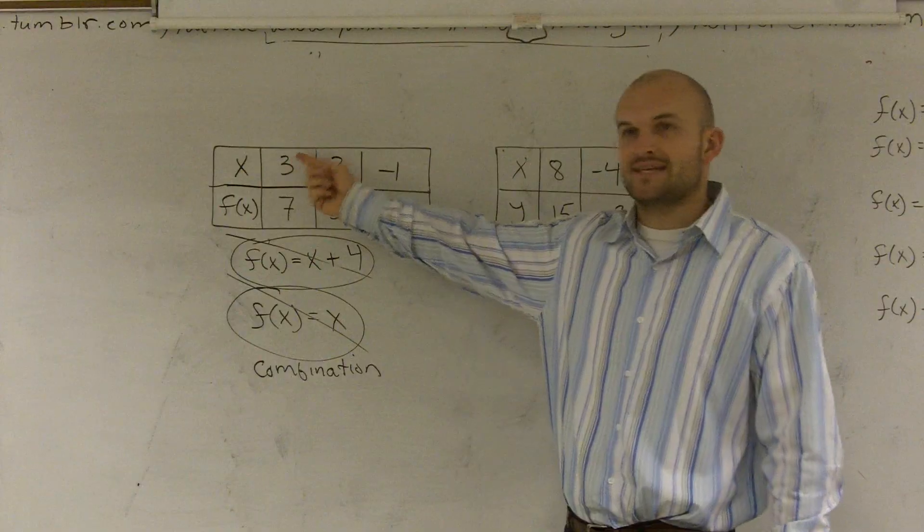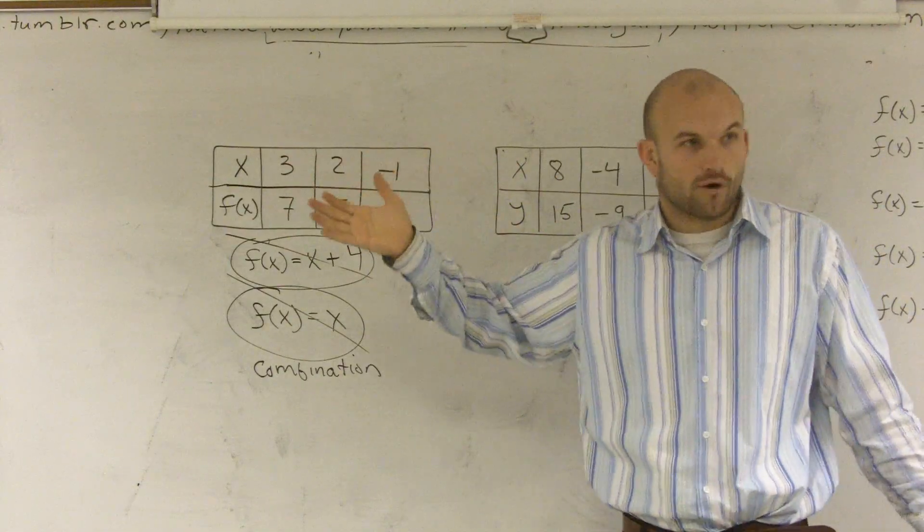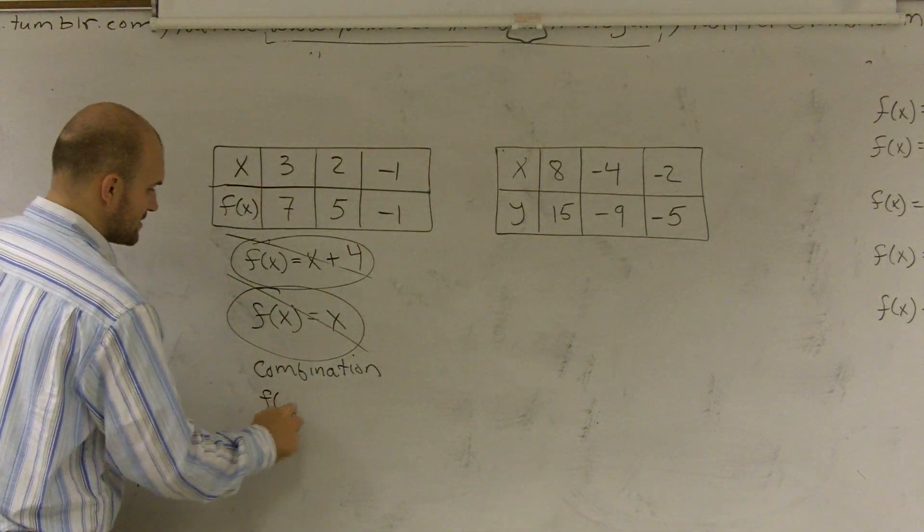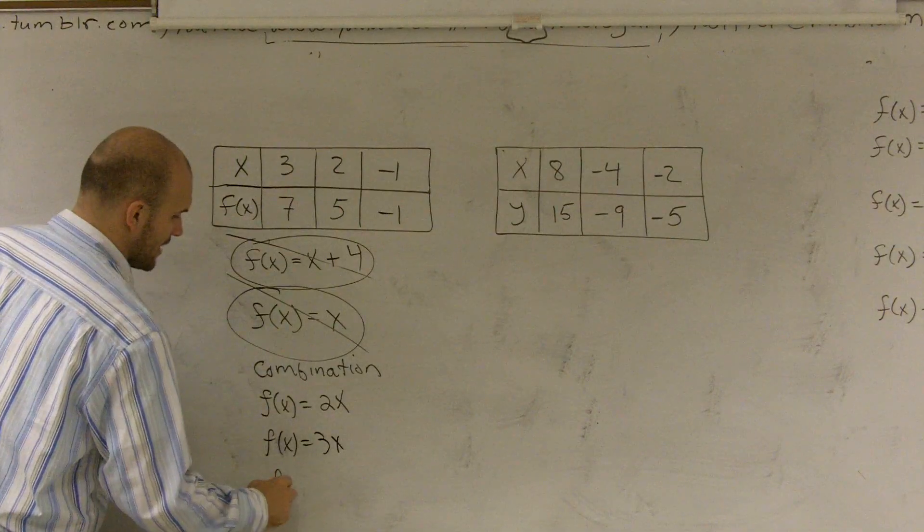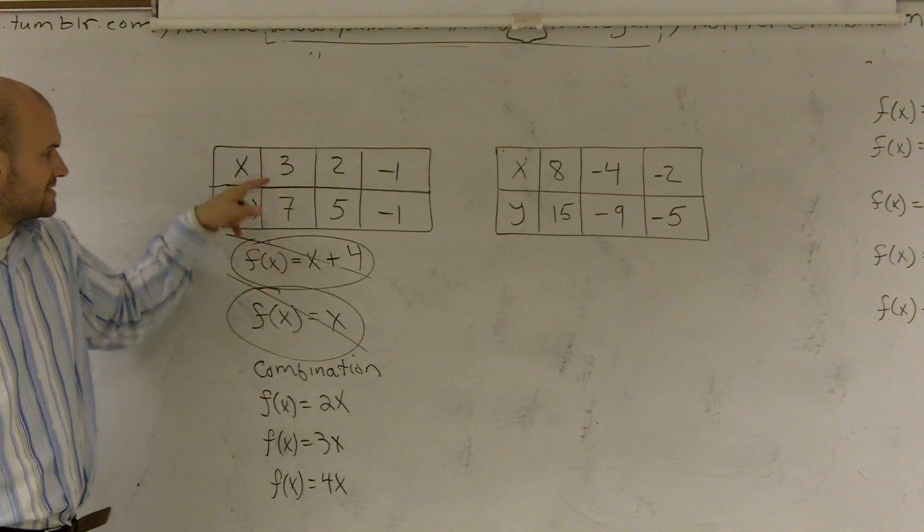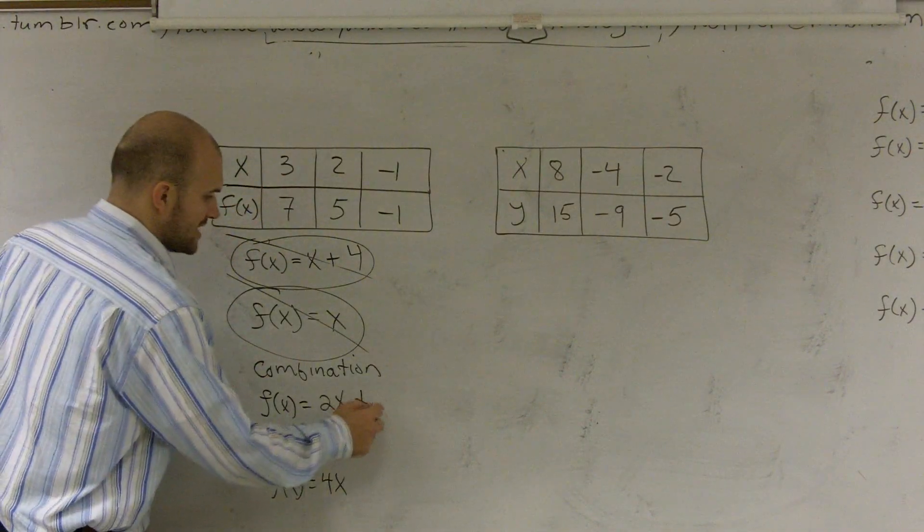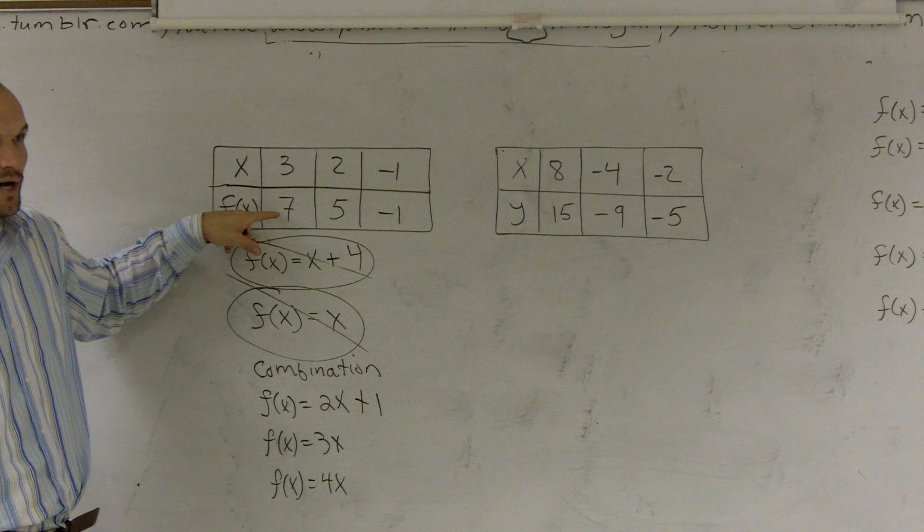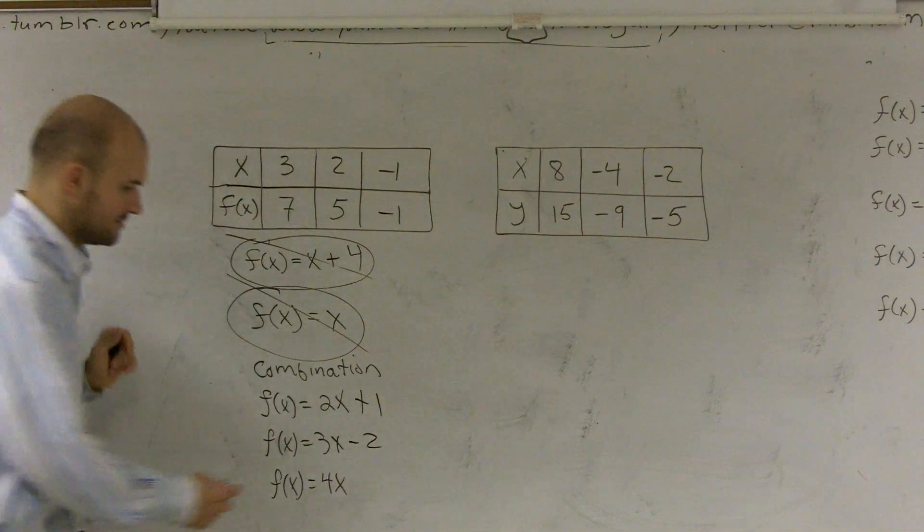So what could I multiply 3 by to get me close to 7? You could multiply by 2. What else could you do? Multiply by 3. You could multiply by 4. So let's just practice. Let's just look at, let's just do 2, 3, and 4. So I can do f of x equals 2x, f of x equals 3x, and f of x equals 4x. So if I did 2 times x, that means 2 times 3. That gives me 6. To get to 7, I have to do what? Add 1, so that's one possible function. If I do times 3, 3 times 3 is 9. To get to 7, I have to do what? Minus 2. And if I did 4, 3 times 4 is 12. To get to 7, I have to subtract 5.